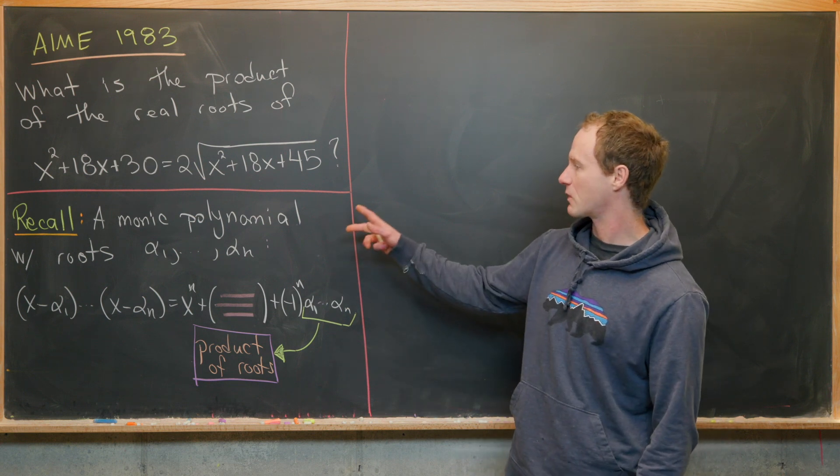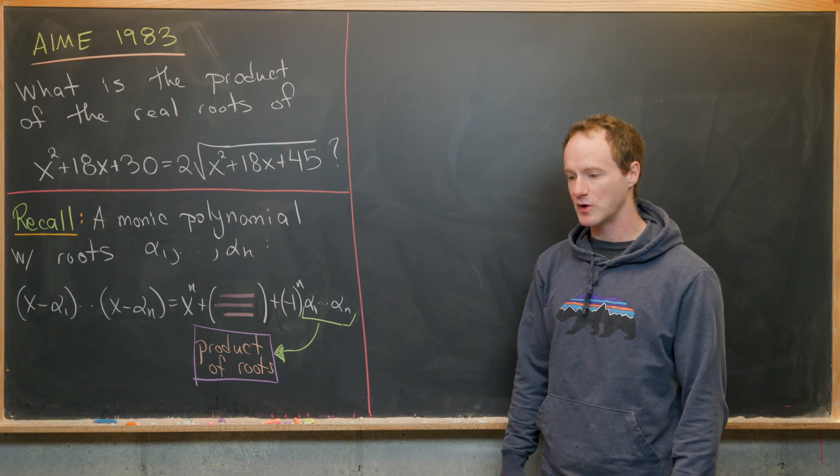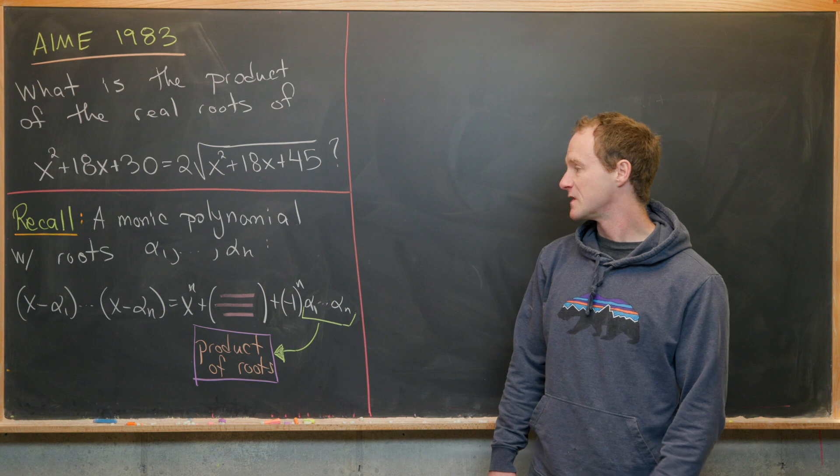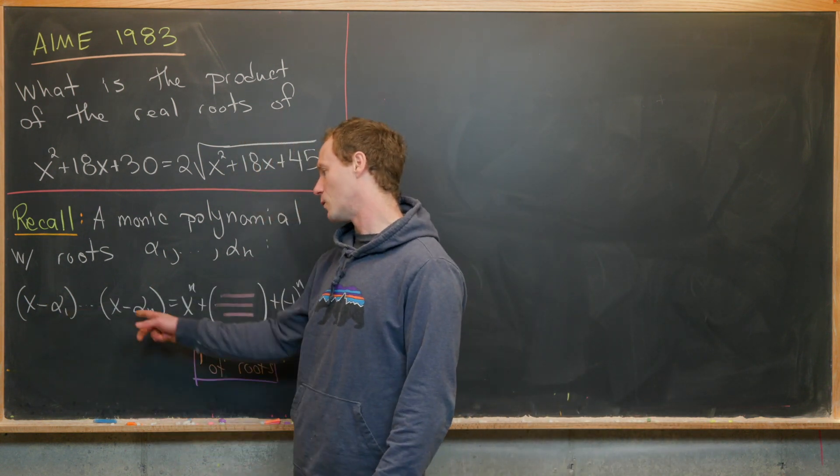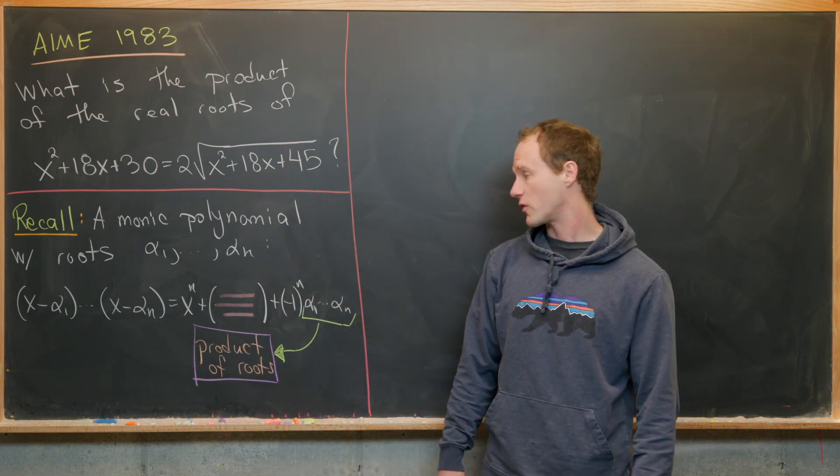Before we do that, recall that if you've got a monic polynomial (that's a polynomial where the leading term has a coefficient of 1), then over the complex numbers you can factor it as (x - α₁)(x - α₂)...(x - αₙ), where α₁ up to αₙ are the roots.